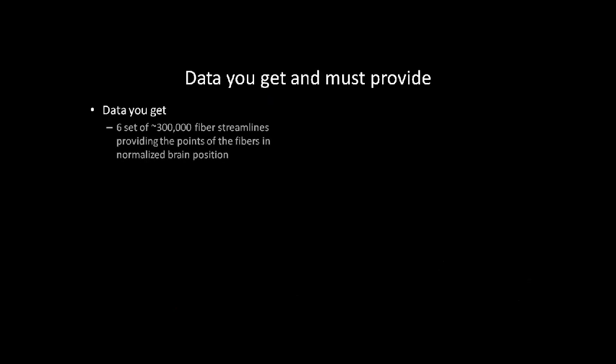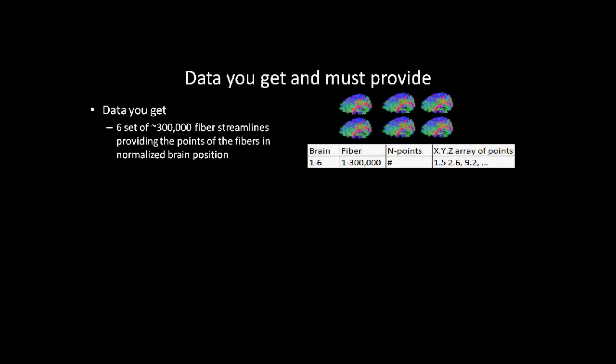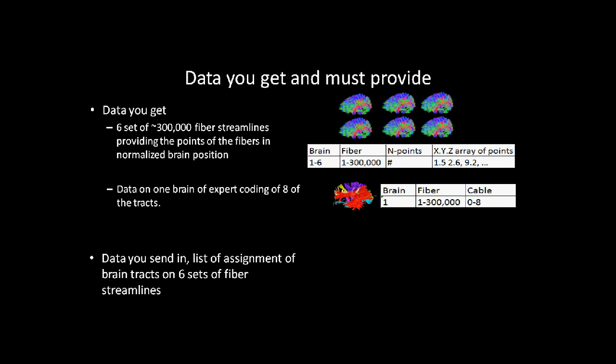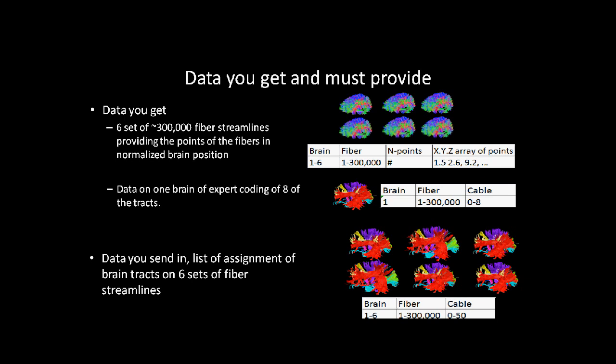The data you receive includes six sets of about 300,000 streamlines providing the points of the fibers in normalized brain position. In addition, you will get data on one brain where each fiber is identified as belonging to one of eight cable tracks, with numbers one through eight and zero indicating not coded. The data you submit will list the assignment of brain tracks for six sets of fiber streamlines — for each brain, for each fiber, which cable it is in, with zero indicating not coded, up to 50 for the tracks, and the numbering scheme must be consistent across brains.